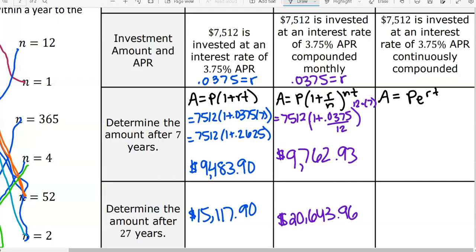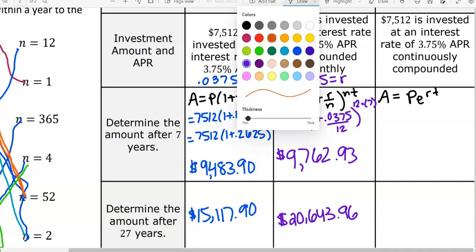All right, so after 27 years you should get $20,643.96. So a lot of calculator work, so be careful. If you type in the wrong thing it would suck. That's why I want to make sure that we know what we're typing and why we're typing it.